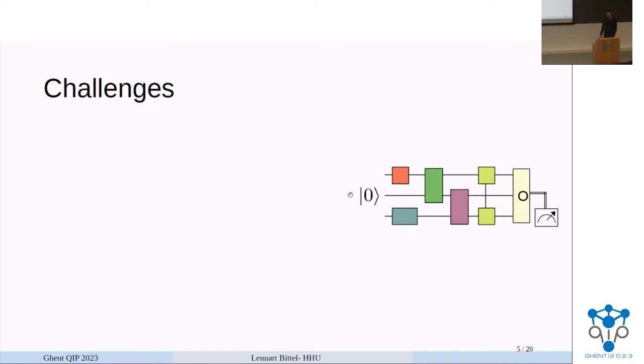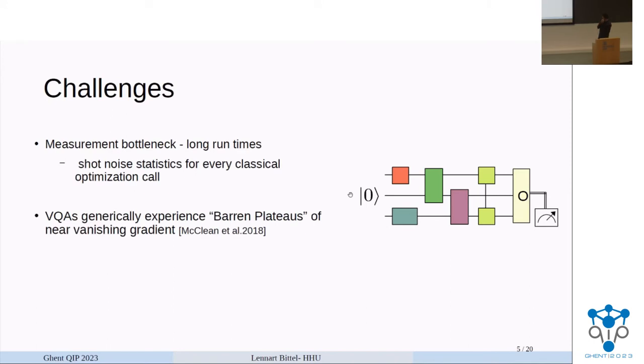But from the theory side, people have already discovered some quite important challenges. One is basically a measurement bottleneck that exists in this approach, which leads to really long run times. The reason is basically that if we want to estimate an expectation value, this is prone to shot noise errors. So every time the classical algorithm calls the quantum algorithm, we do have to perform many rounds of measurements, which if we consider that trapped ions take on the order of seconds, this can already mean that the entire protocol will run really long.